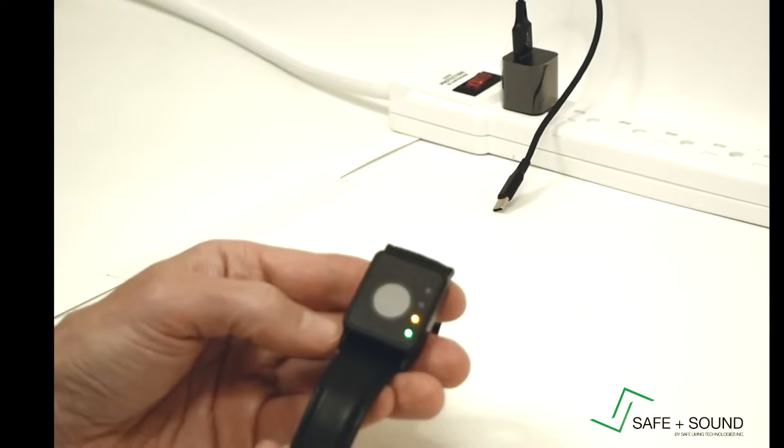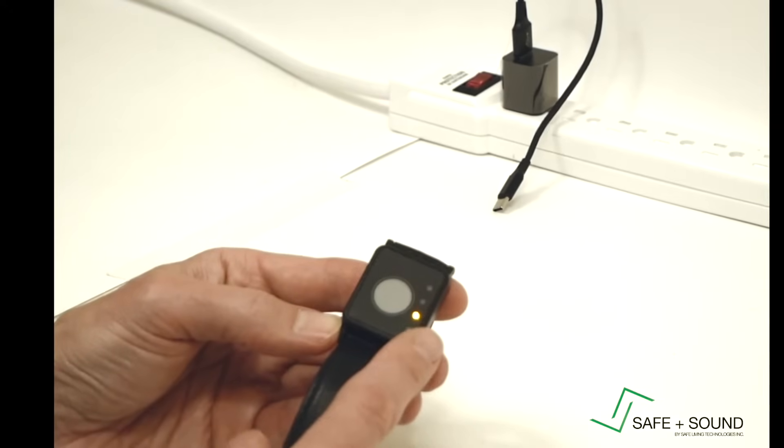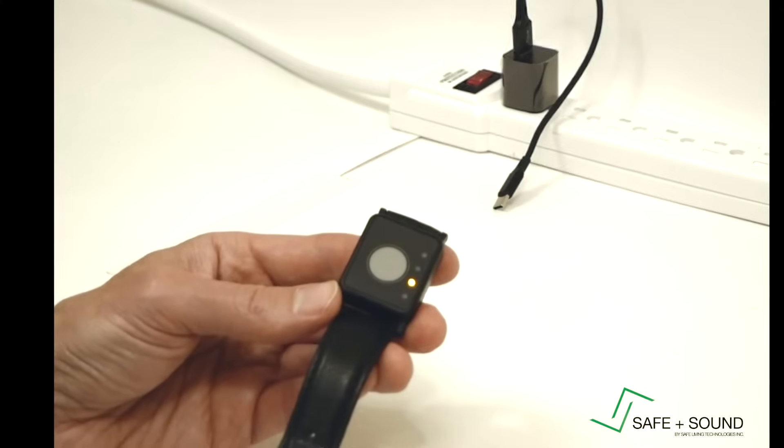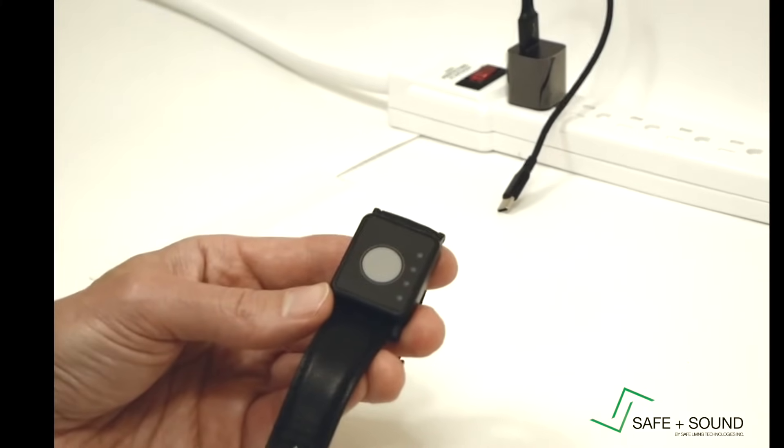To turn the unit on, push the button once. It will show you the current battery indication level, cycle through all the LEDs, and then show you the current RF environment level. Now it's in standby mode.